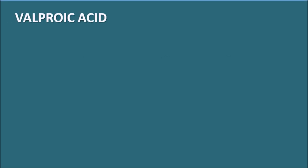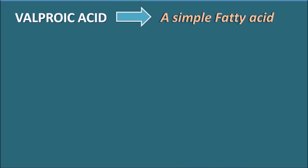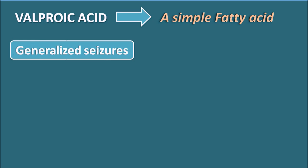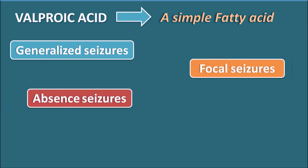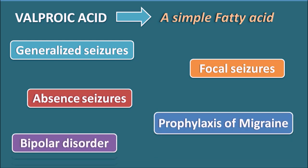Valproic acid is a simple fatty acid that can be used in various clinical conditions like generalized seizures, focal seizures, absence seizures, as well as prophylaxis of migraine and bipolar disorders. It is one of the drugs used in multiple clinical conditions. In this video, we will see how valproic acid is useful in all these conditions, its mechanism of action, possible side effects, and how it is given.